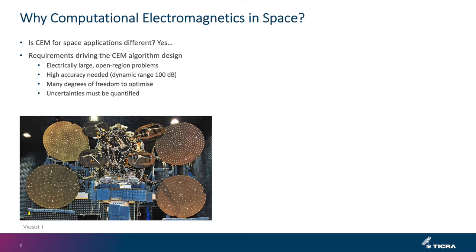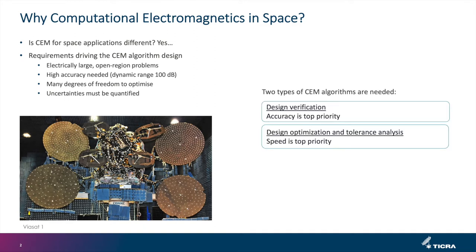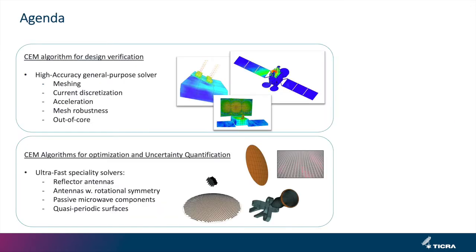Basically one algorithm cannot do all this at the same time, so we have to look at two different types of algorithms. One type is for design verification where accuracy is our top priority, and another type is for design optimization and tolerance analysis where speed is our top priority. That's basically the agenda of my talk today.